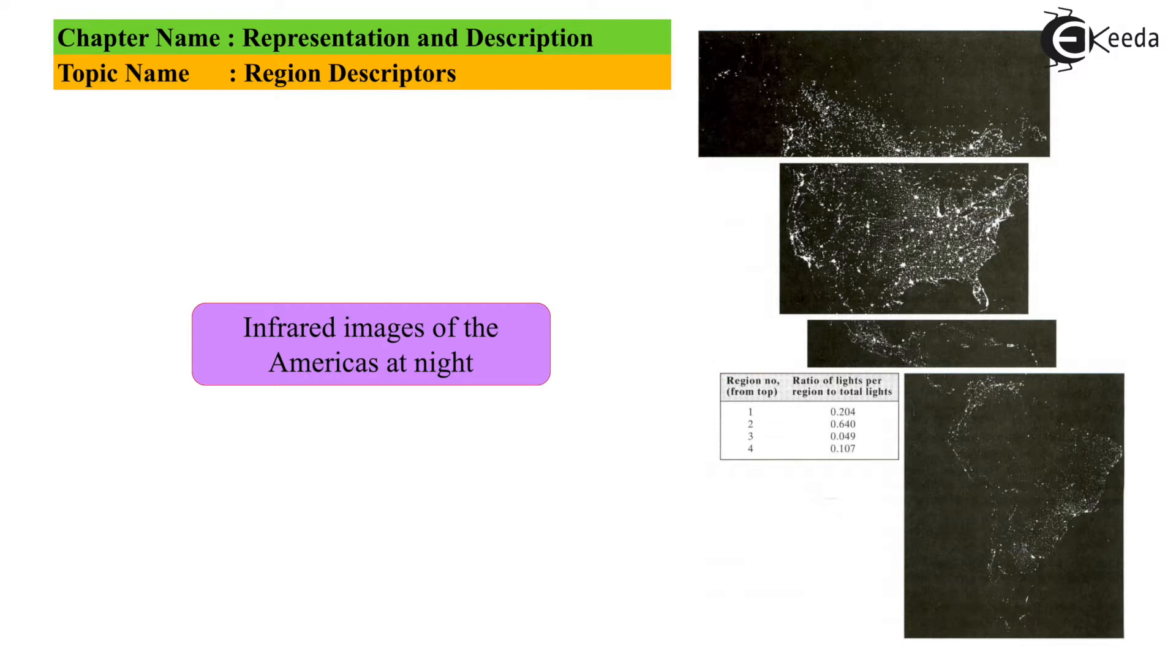Right from North America to the South American continent, we have these infrared images. The four sub-images show the map along with a simple tabulation of region numbers 1, 2, 3, 4 with respect to the ratio of lights for regions to the total number of lights. Region 1: 0.204, region 2: 0.640, region 3: 0.049, region 4: 0.107. The maximum value is at the second region, which is exactly the US.